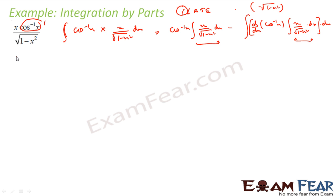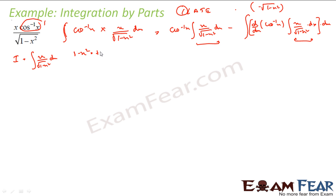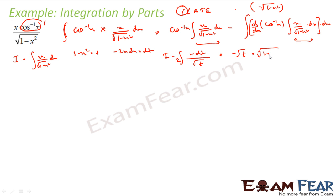Let me show this: let I = ∫x/√(1−x²) dx. Set 1−x² = t, so −2x dx = dt, meaning x dx = −dt/2. The integral becomes ∫(1/√t)·(−dt/2) = −√t = −√(1−x²). This is equation 1.